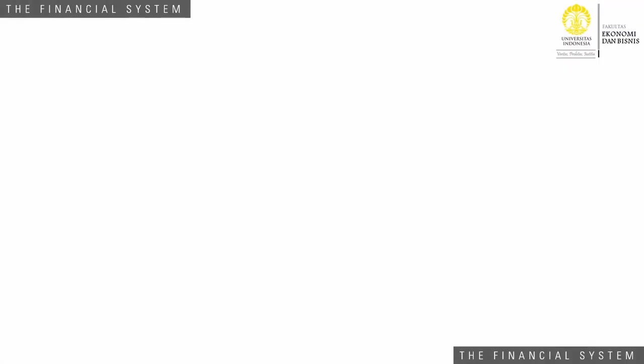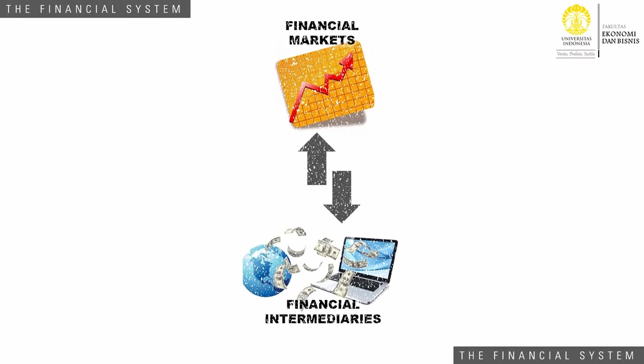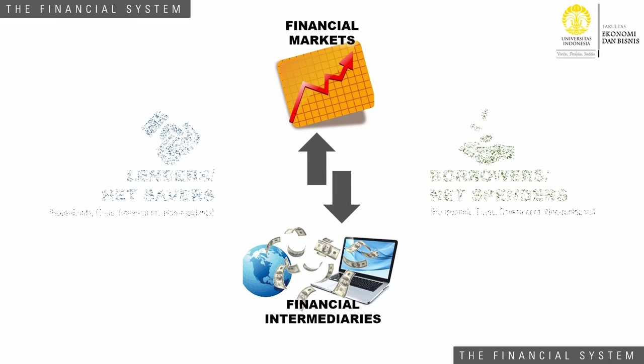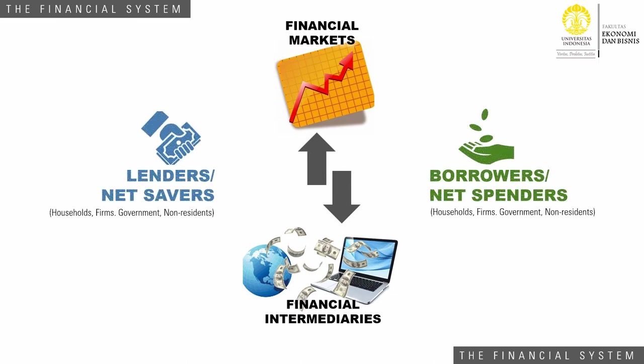Let me begin by showing you a simple diagram of the financial system. There are two main financial institutions: financial markets and financial intermediaries. The two institutions will match lenders who have excess funds to lend and borrowers who need funds to borrow.